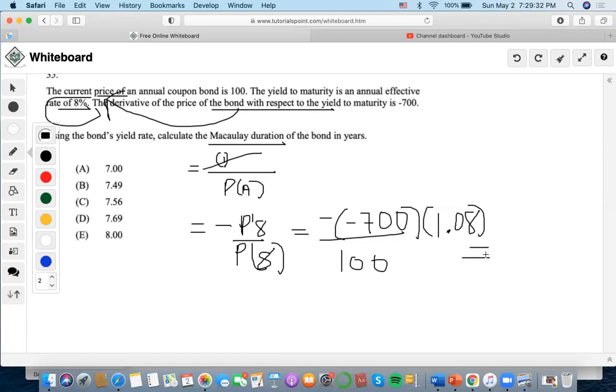Now we're going to solve this. We find that this is 756 divided by 100, which is 7.56. The answer is C.